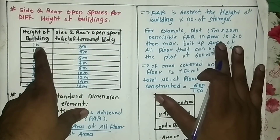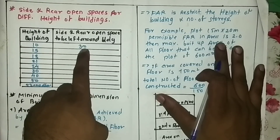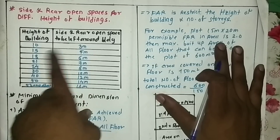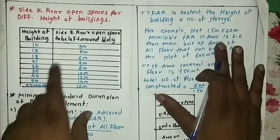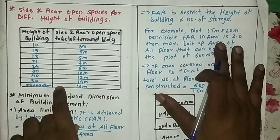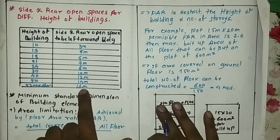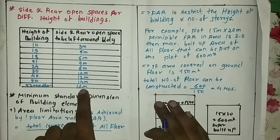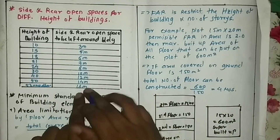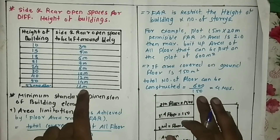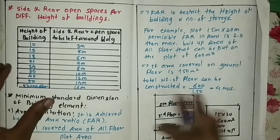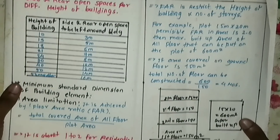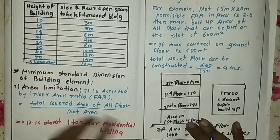For a building height of 10 meters — about three stories — you have to keep a side or rear distance of 3 meters. For 15 meters height, you need 5 meters. Above 53 meters — more than 15 stories — you have to keep a side distance of 16 meters. These are the bylaws for keeping side and rear open space.